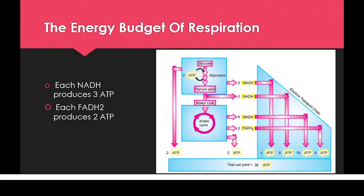Now let's look at the energy budget of respiration — how many ATPs are synthesized in cellular respiration. During glycolysis, the glucose molecule converts into pyruvic acid in the cytoplasm. Although 4 ATPs are produced, 2 ATPs are consumed, so the net ATP yield from glycolysis is 2 ATPs.